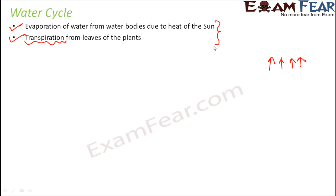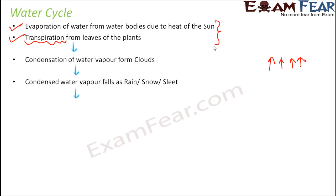Now, what are the processes by which water from the atmosphere comes down? The water vapor accumulating in the atmosphere condenses to form clouds. When the temperature falls, water vapors condense into tiny water droplets, which accumulate over dust particles in the atmosphere to form clouds. The condensed water vapor then falls as rain, snow, or sleet, depending on the temperature. When the clouds become heavy enough, they fall as rain, or as snow if the temperature is very low. So rainfall is one way water from the atmosphere falls back to the earth.